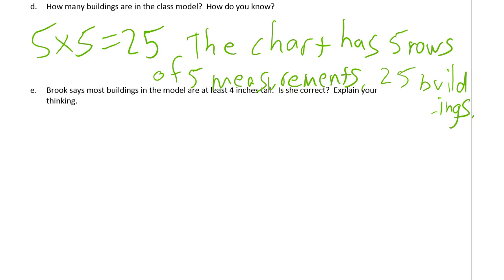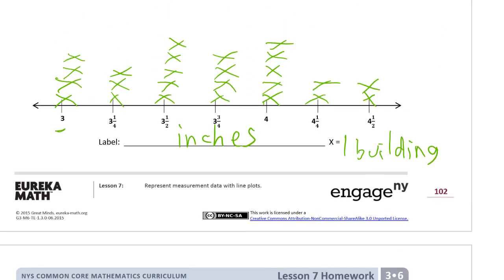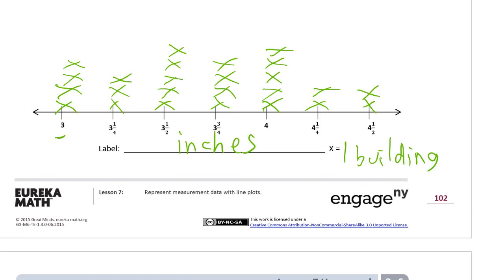Brooke says, but it's readable, and that's what matters. Can somebody read it who doesn't already know what I'm trying to say? Can they read it? Well, my handwriting could be neater, but I think that's readable. So Brooke says most buildings in the model are at least four inches tall. Is she correct? Let's see. Most are at least four inches tall. So to be in this club of most, you have to be at least four inches tall, which means the smallest anything four inches or larger, since at least means that's the smallest you can be and still be in this club. Is that most?